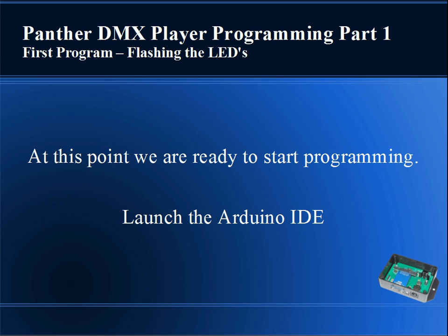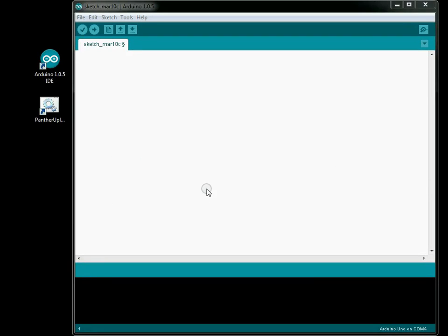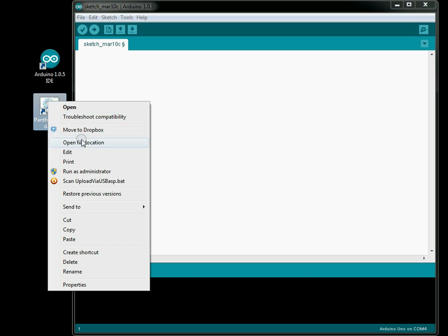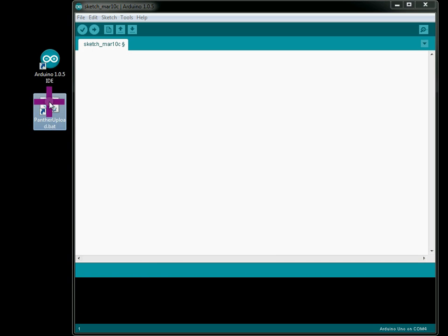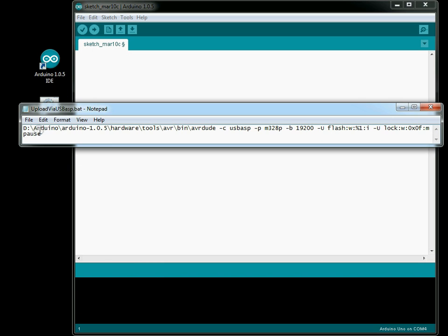Okay, so now we're ready to create our first program. We're going to be flashing the LEDs on the Panther, so we'll use the Arduino IDE to build and compile the hex file and then upload that to the Panther. Go ahead and launch the Arduino IDE at this point. Before we start programming, I wanted to show you the contents of my pantherupload.bat file.